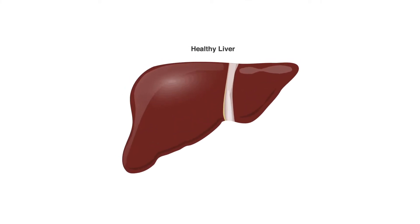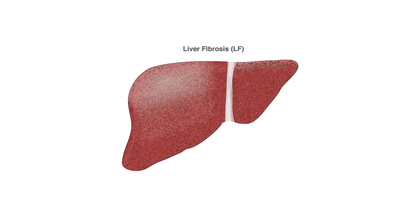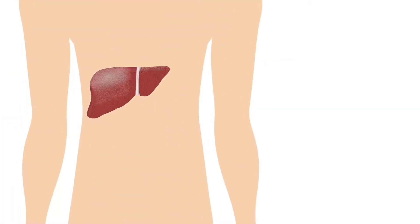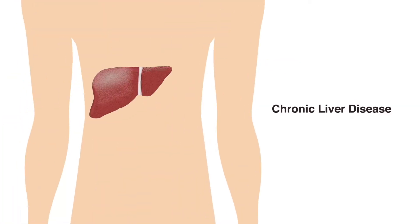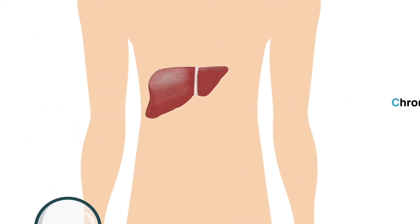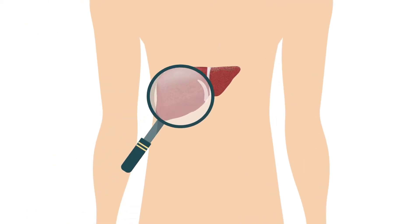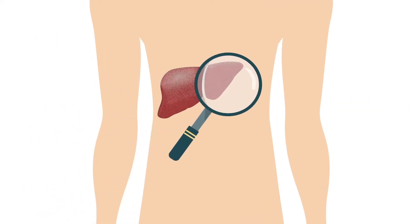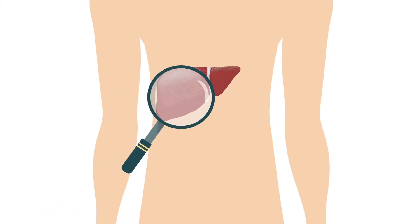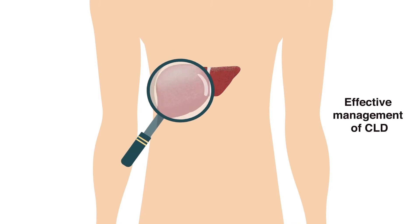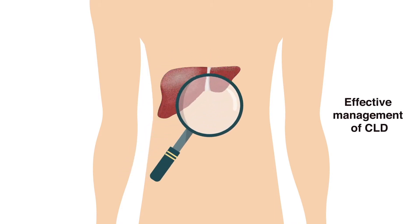Liver fibrosis, or LF, is characterized by excessive scarring in the liver in response to injury, and often occurs in chronic liver disease, or CLD. Accurate monitoring of the degree of liver fibrosis is essential for effective management of CLD patients.